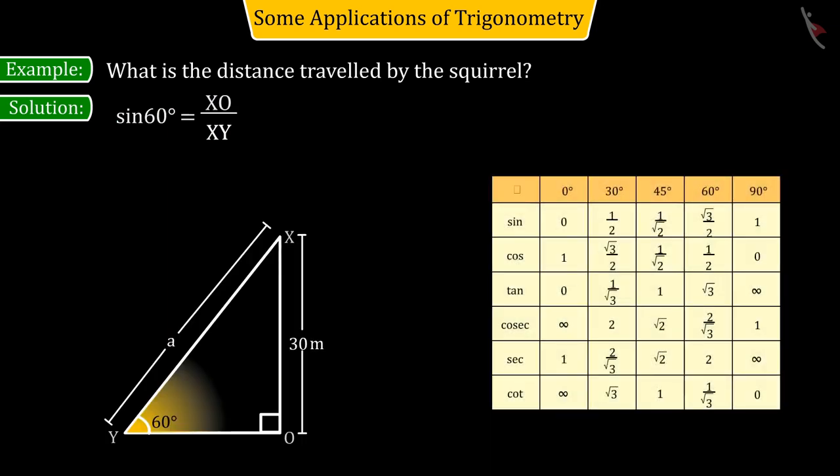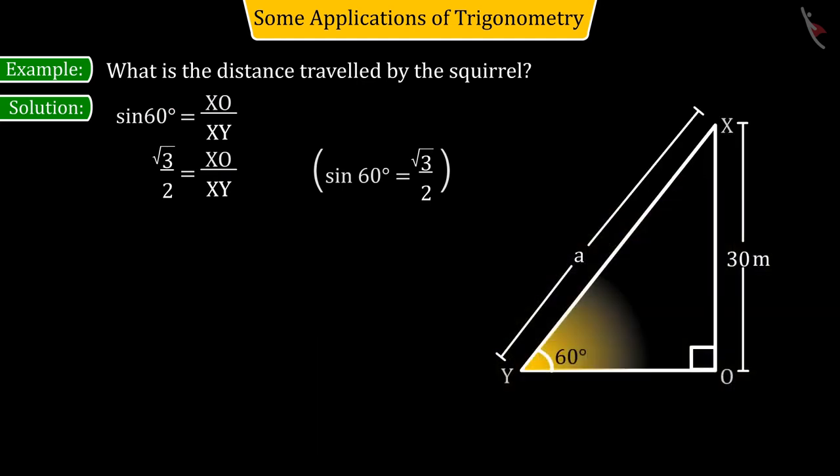On the left side, there is sine 60 degrees whose value is equal to the square root of 3 by 2. And on the right side, with the help of the given information, keeping the values of XO and XY as 30 and A respectively, when we solve,